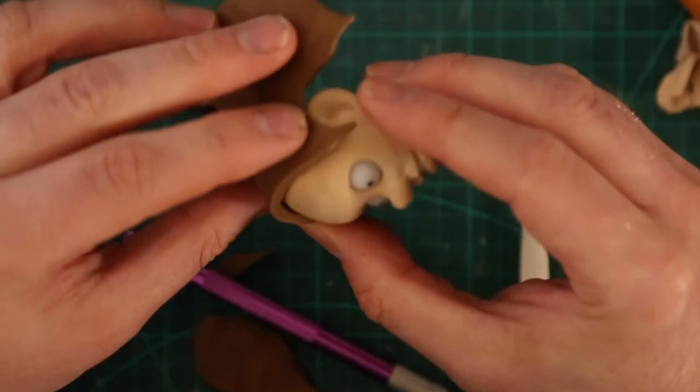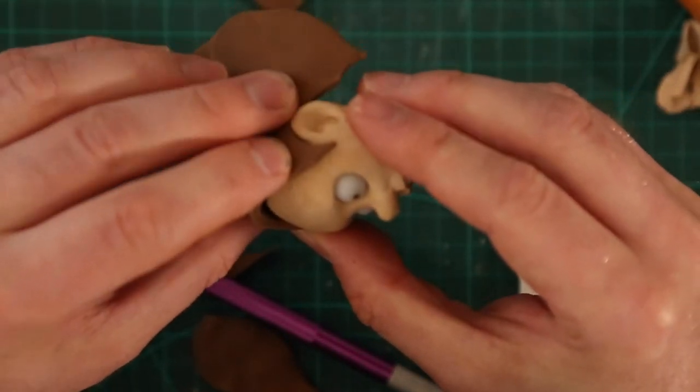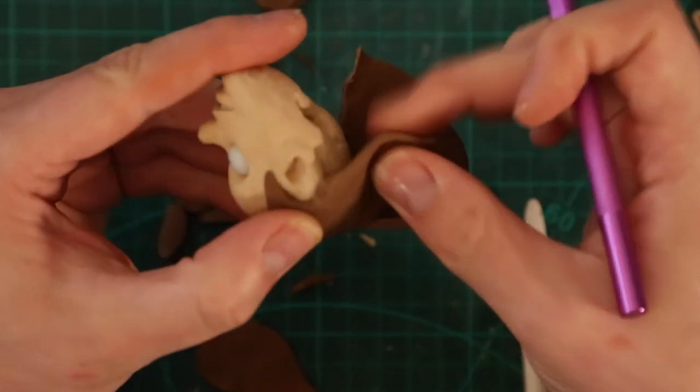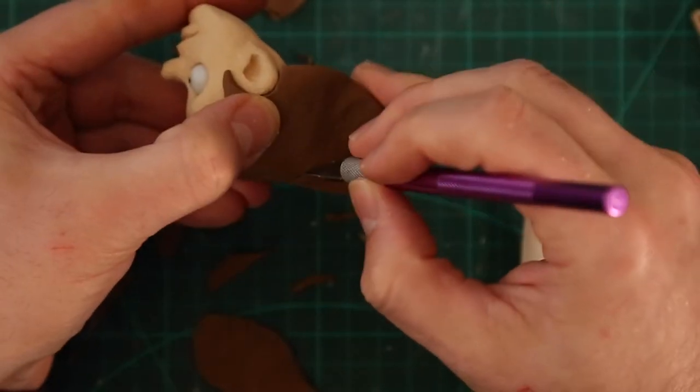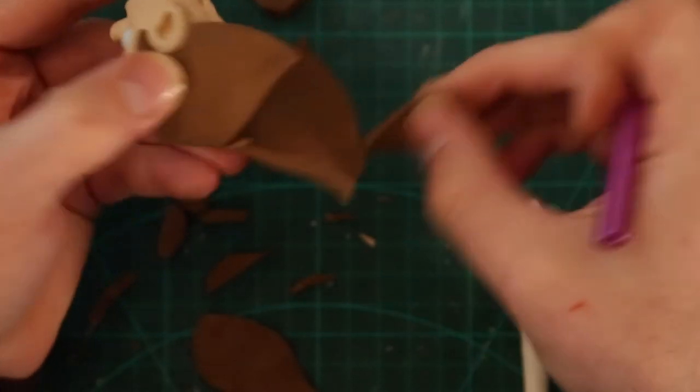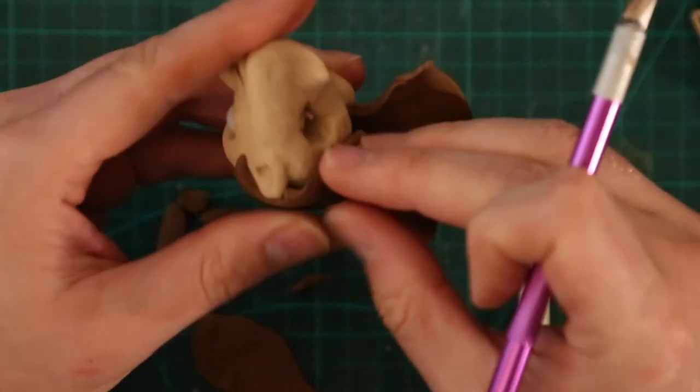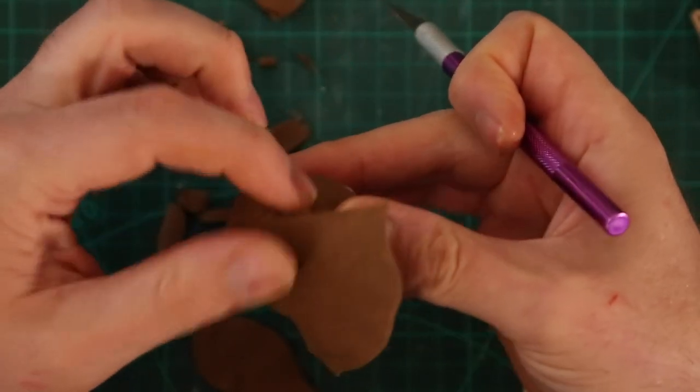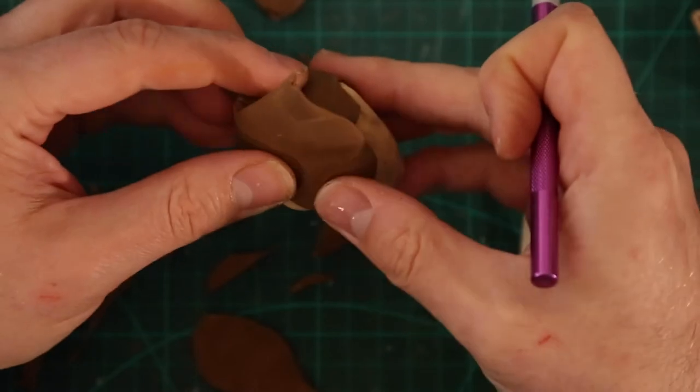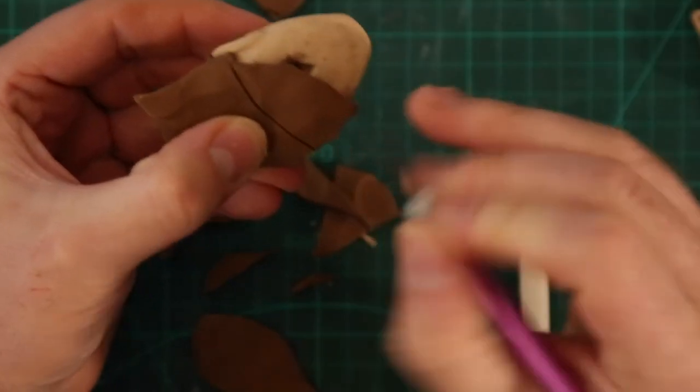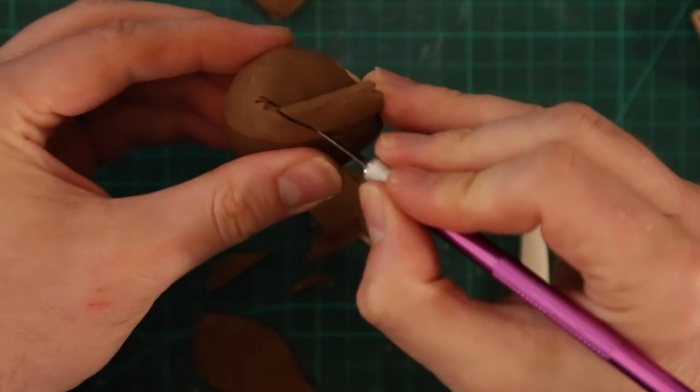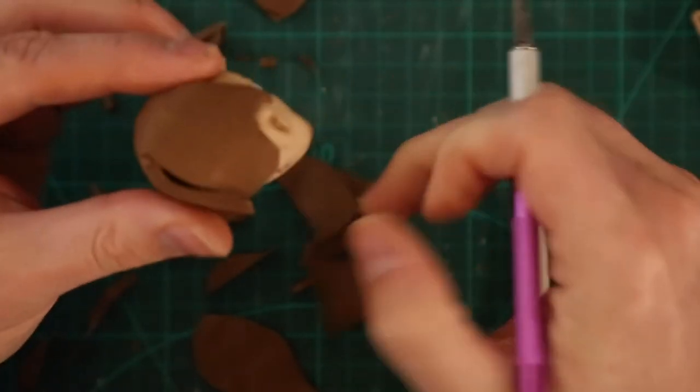This hair was a pain in the bum to do. Just plasticine hair in general is quite difficult. It's either a case of you want to go really detailed or you want to kind of really simplify it, and it's kind of trying to find that middle ground where it's not too detailed, but there's enough there that kind of emulates the look of Michael J. Fox.